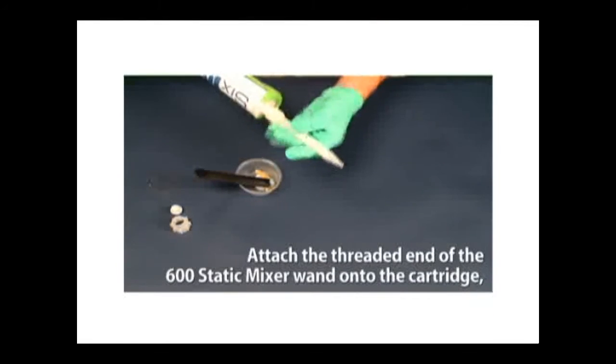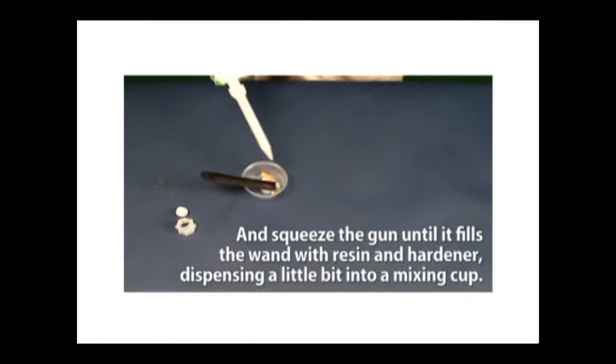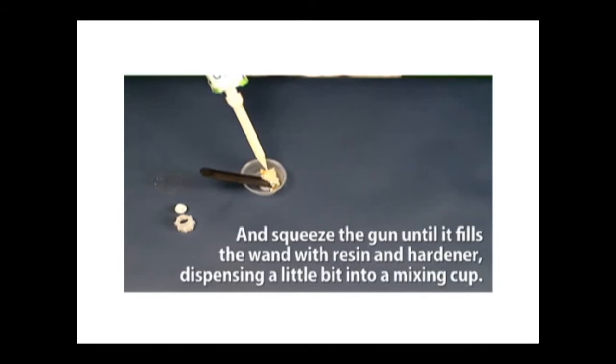Attach the threaded end of the 600 Static Mixer wand onto the cartridge and squeeze the gun until it fills the wand with resin and hardener, dispensing a little bit into a mixing cup.